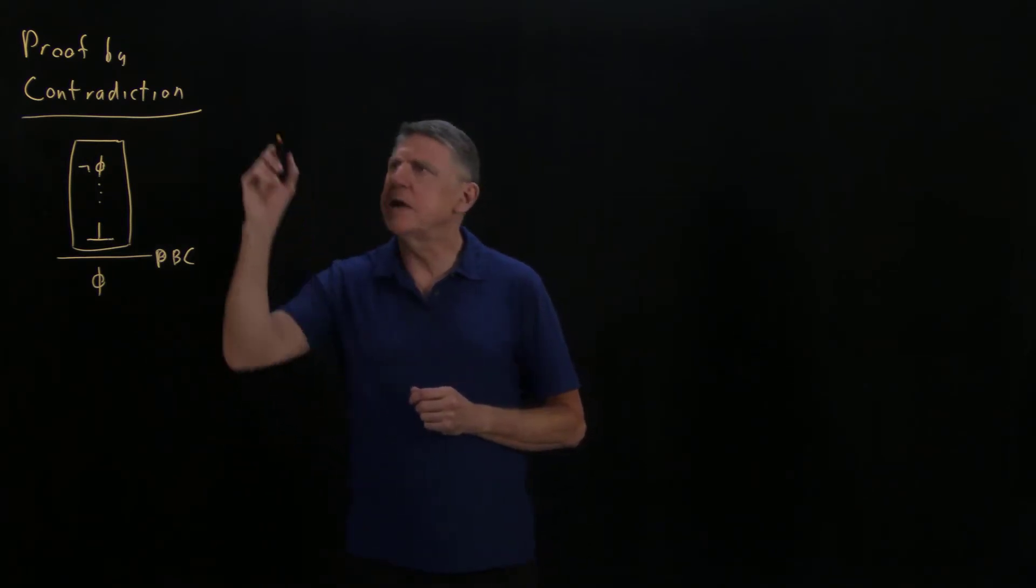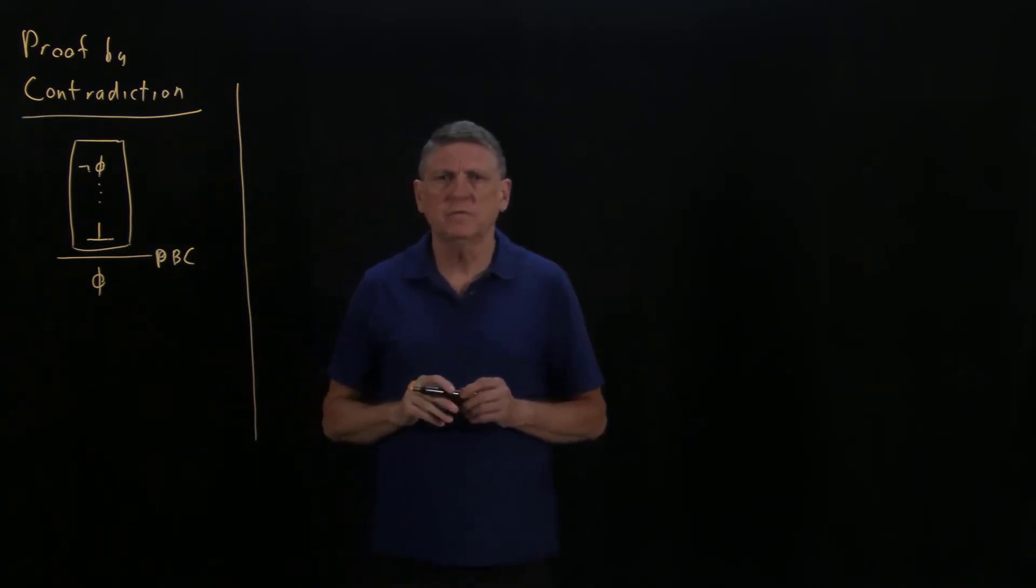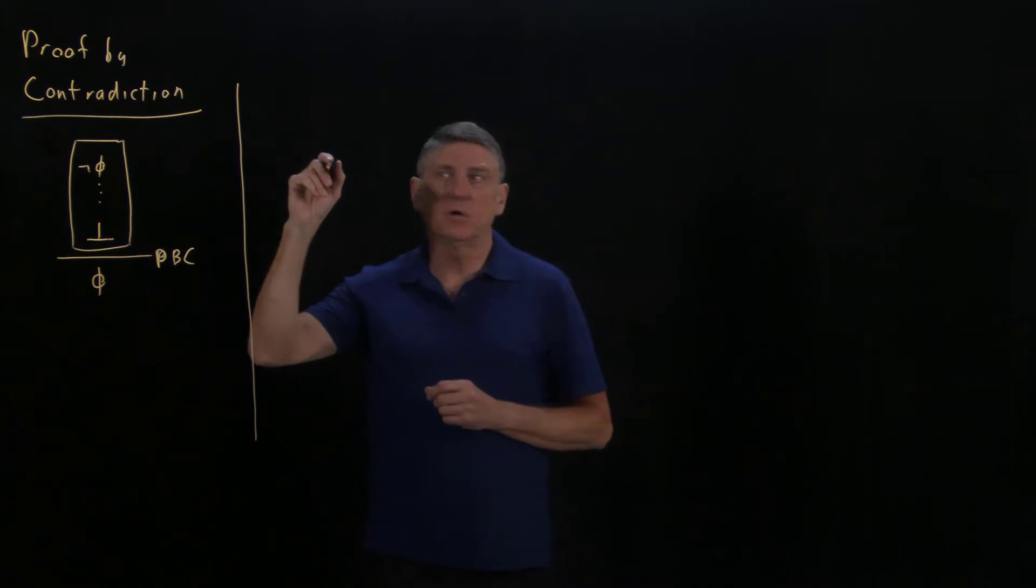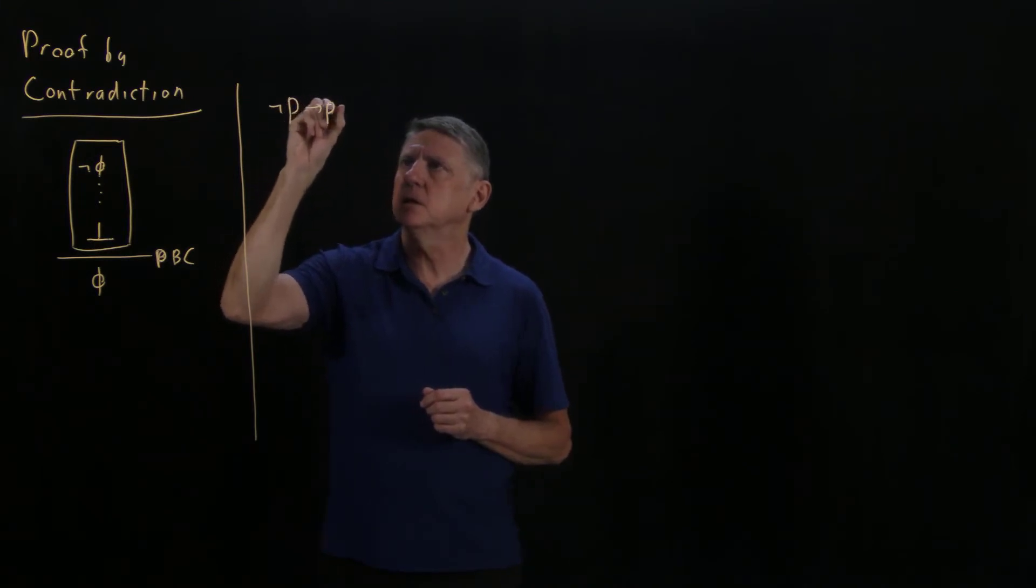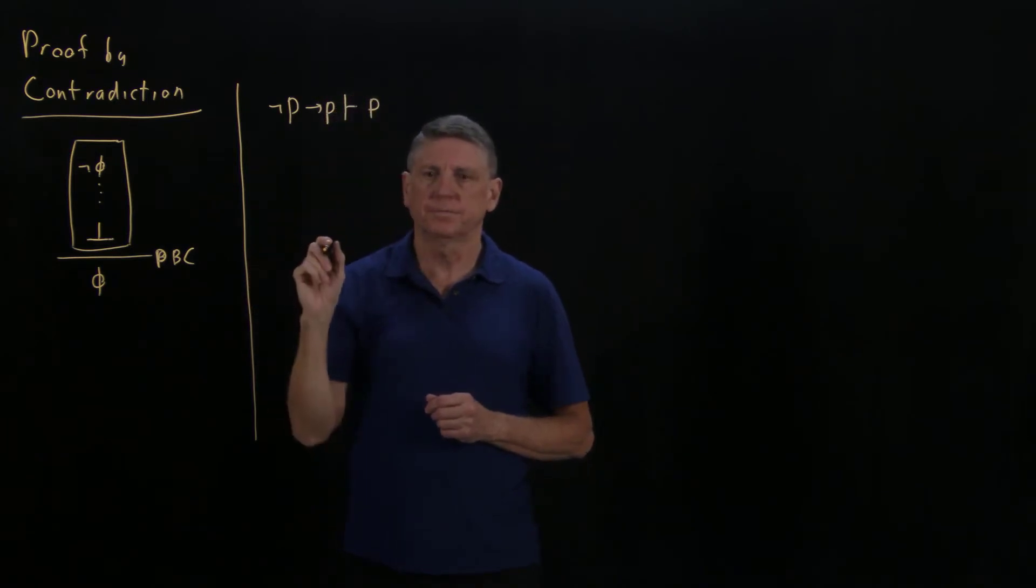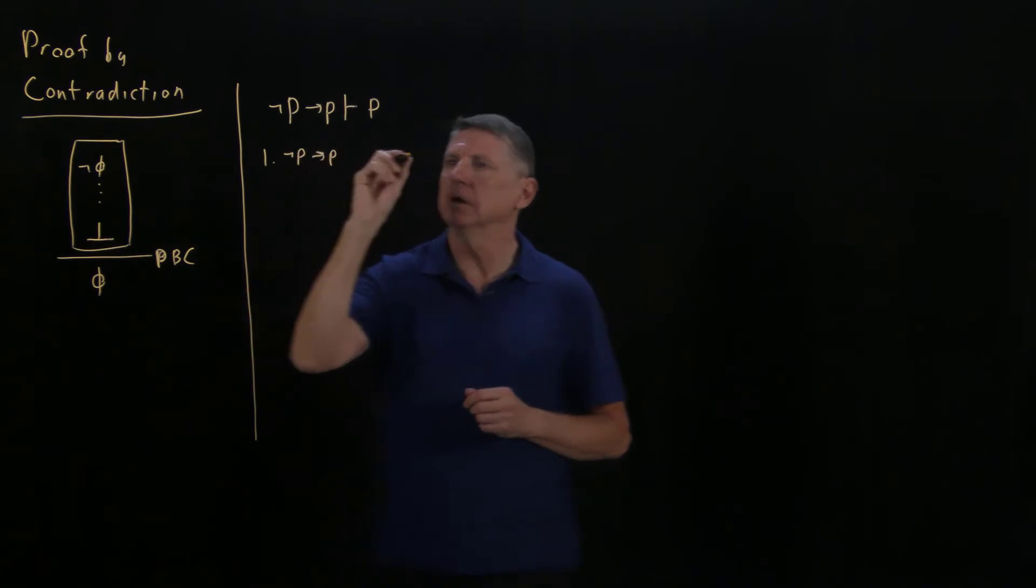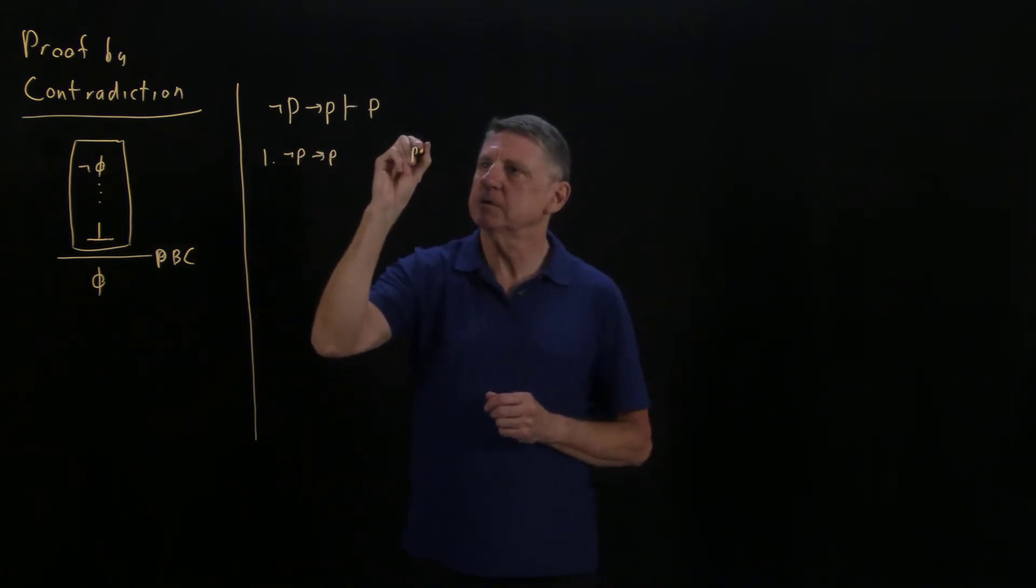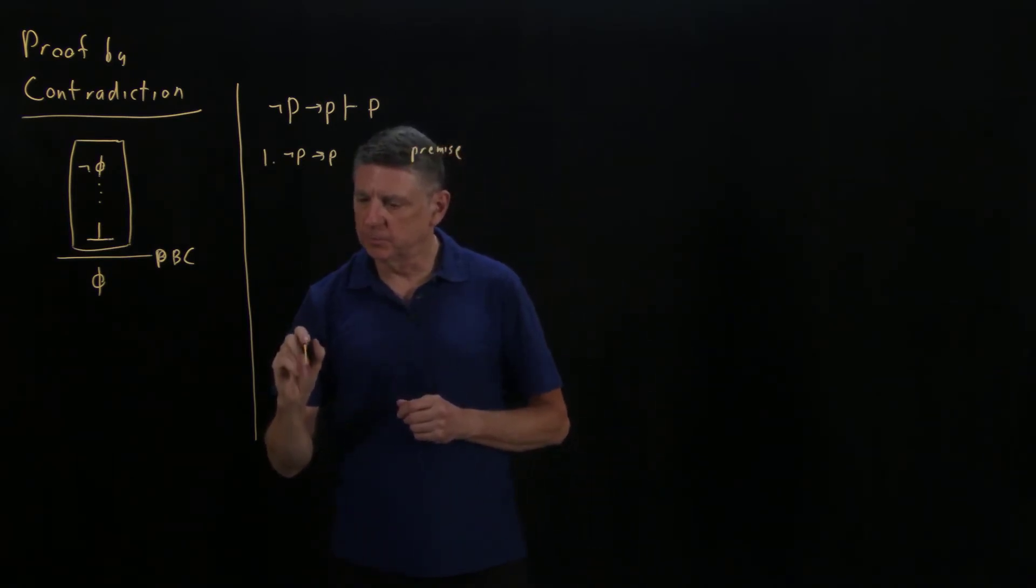Let's look at a simple example of a proof by contradiction, and this also involves one of the oddities of material implication. If we suppose that the negation of P material implies P, we can prove that P must be true. As usual, we'll write our single premise here: the negation of P material implies P. That is our premise, and what we would like to conclude is the formula P.